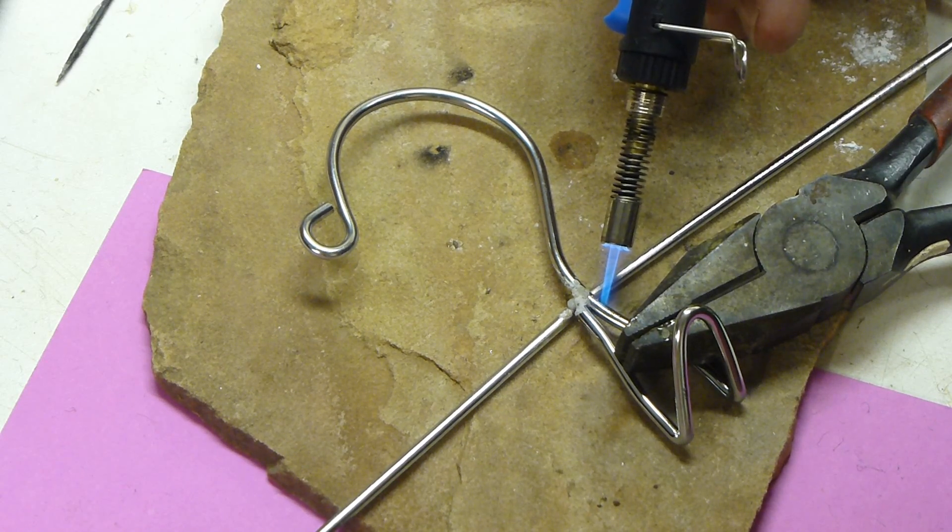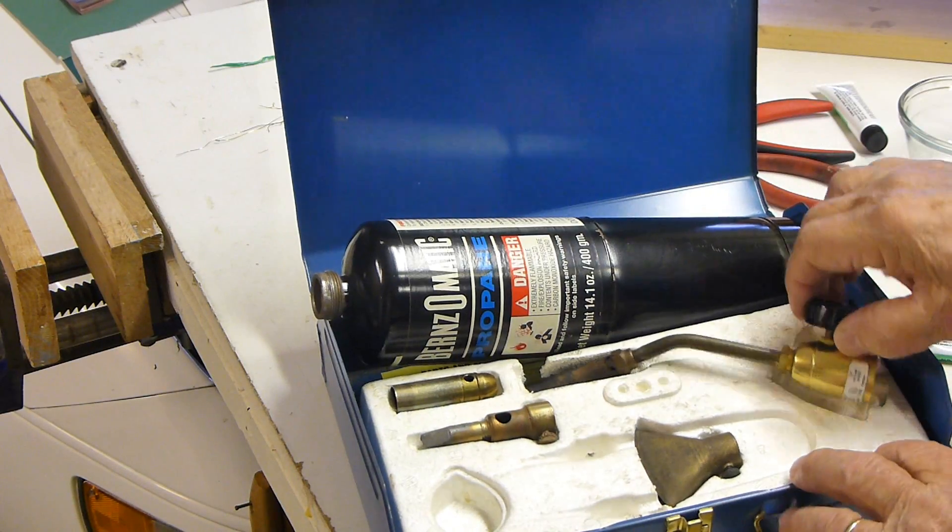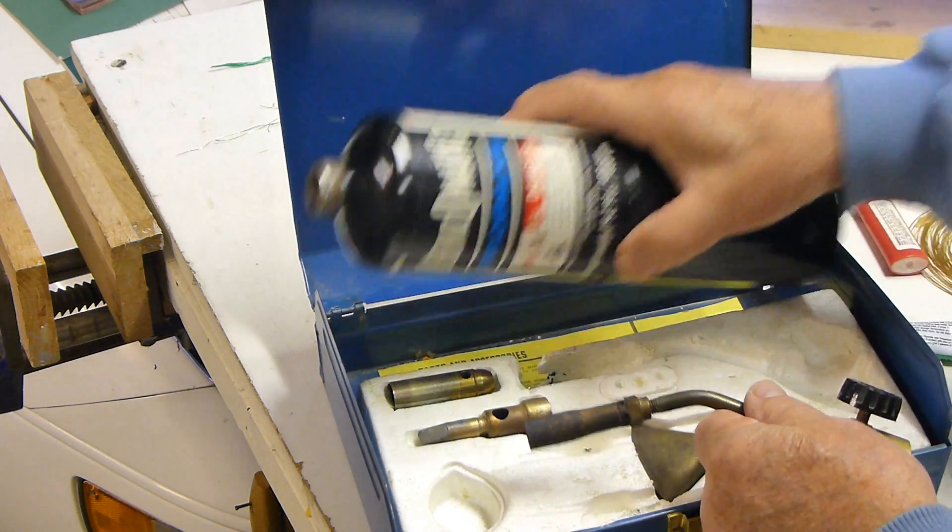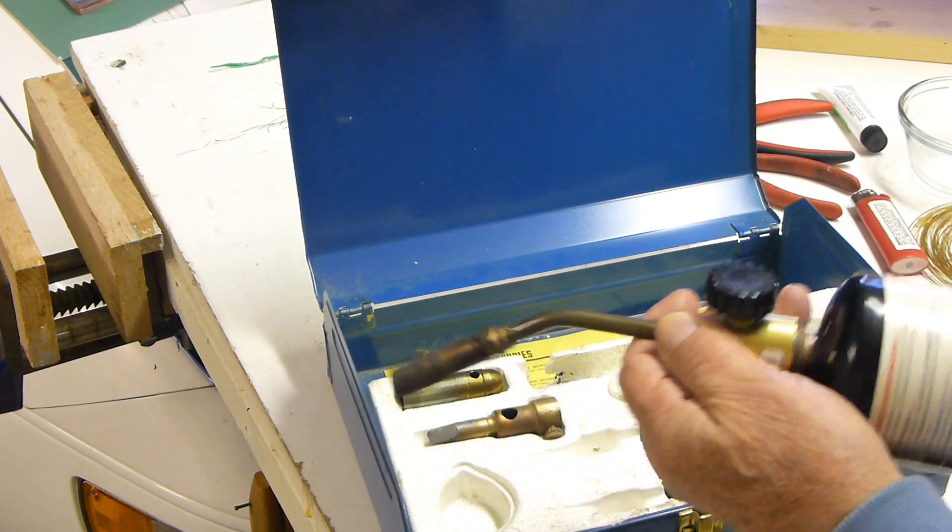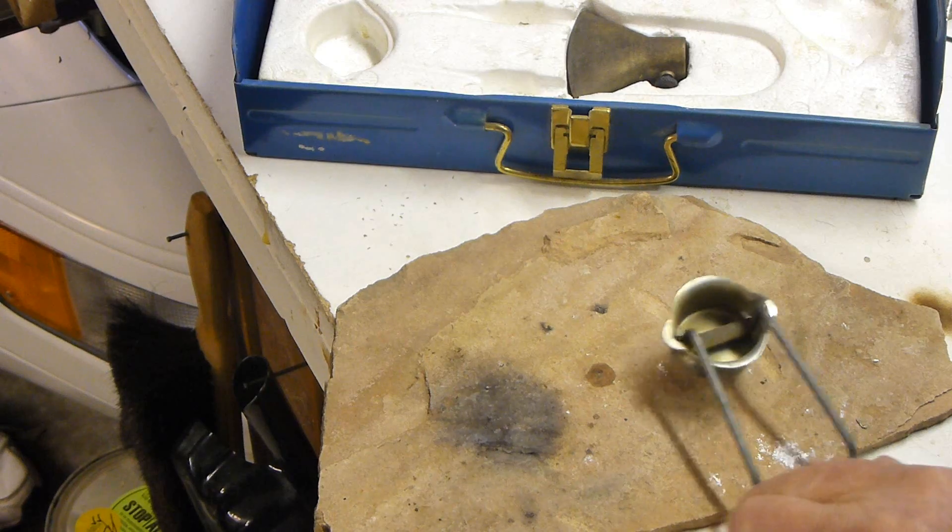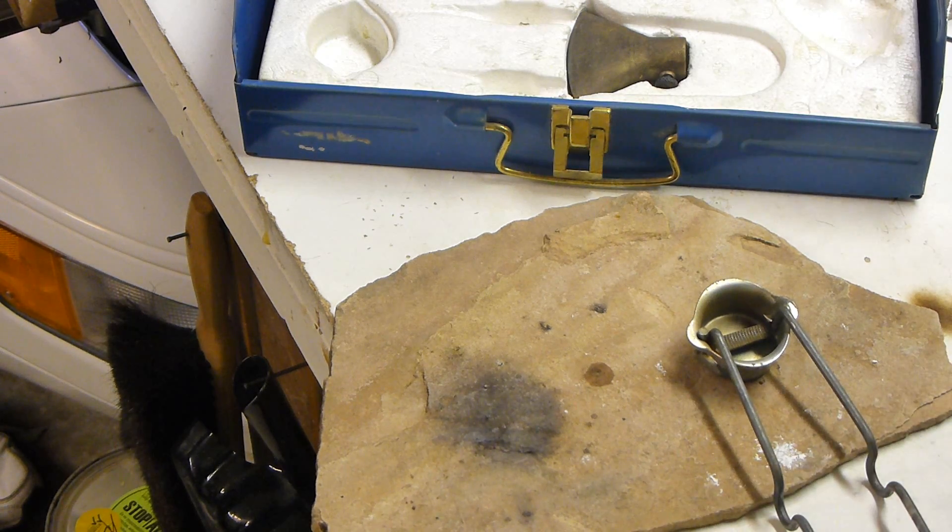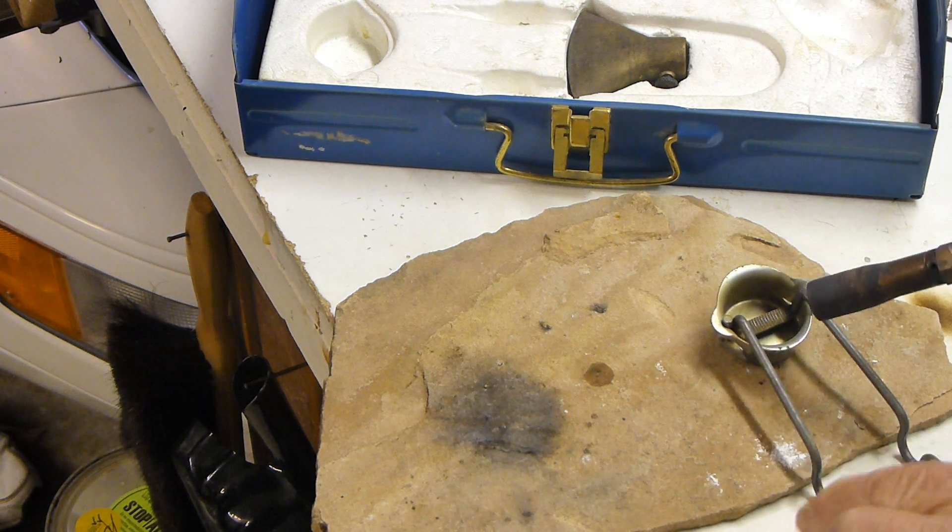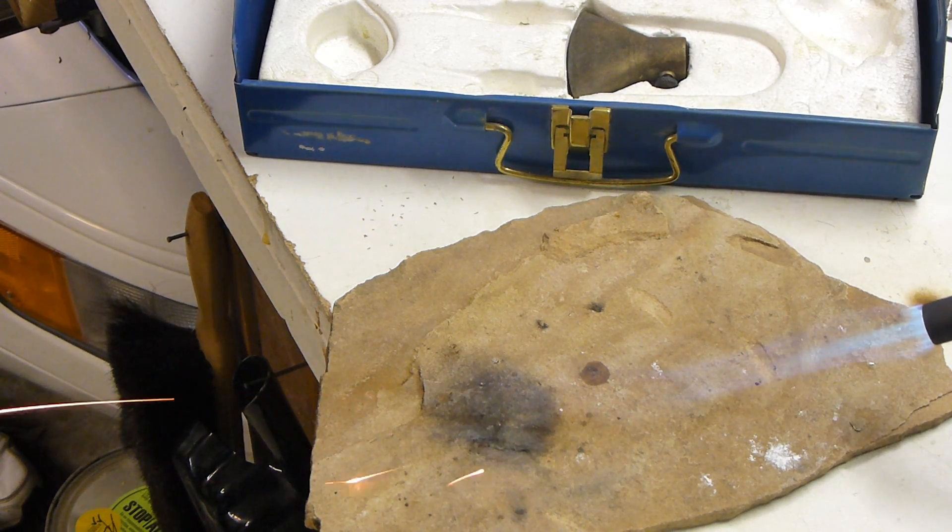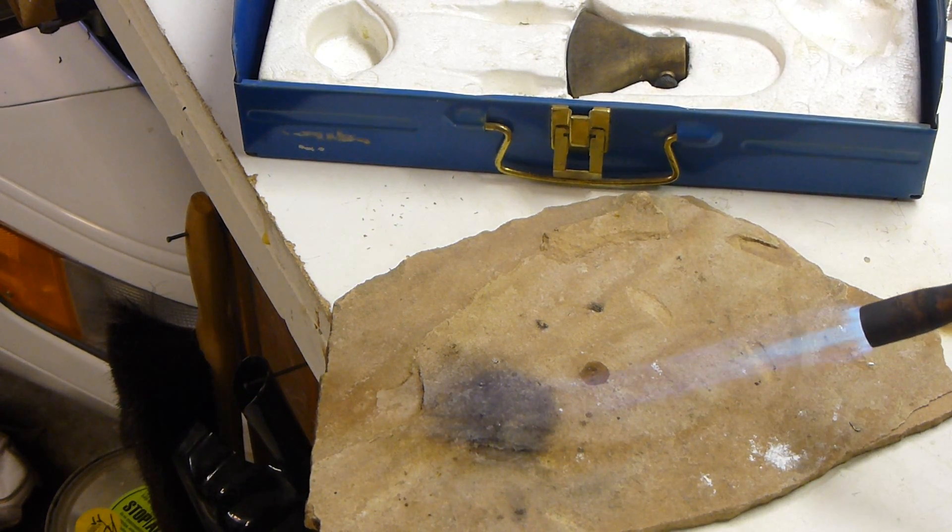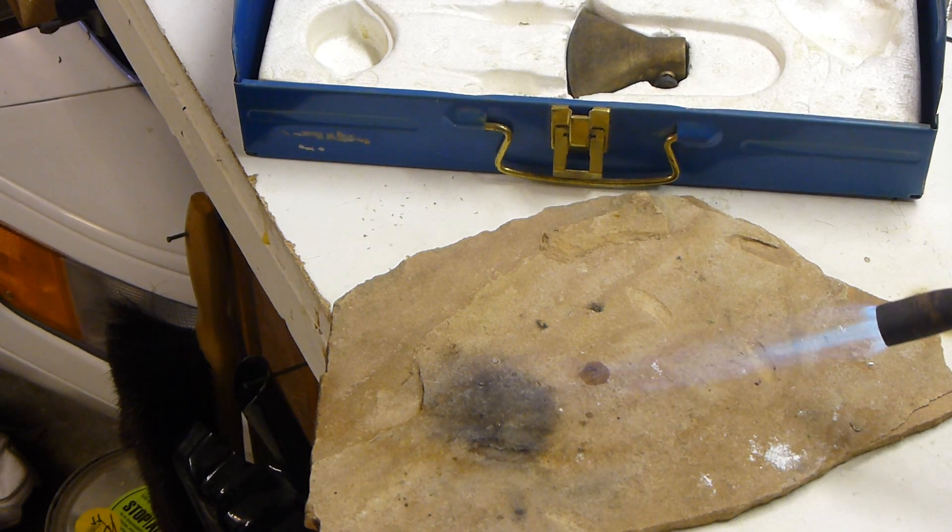I grabbed my old big torch that I've had for many years, put the large fixture on it, and started that. Here's the spark unit to get the thing ignited—it's actually used on the small torch as well. You can see that the flame is much bigger, much hotter, and therefore it would heat this joint much quicker.